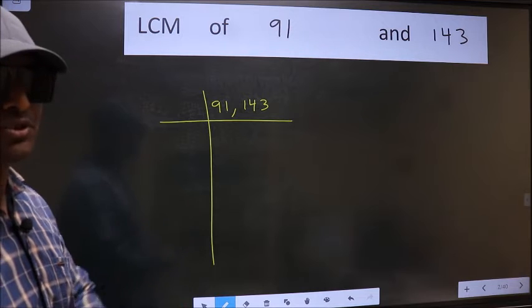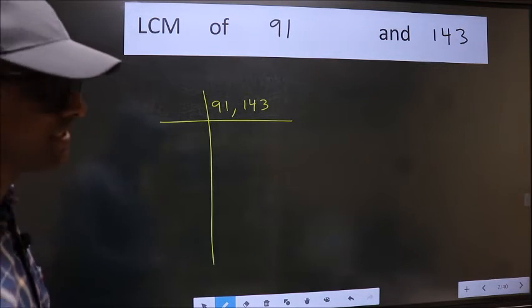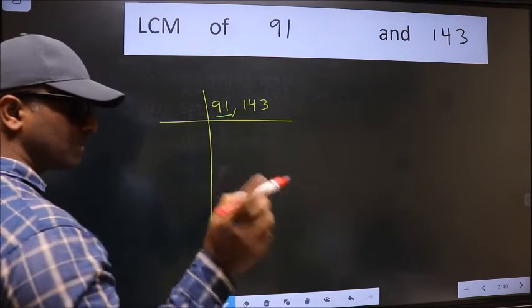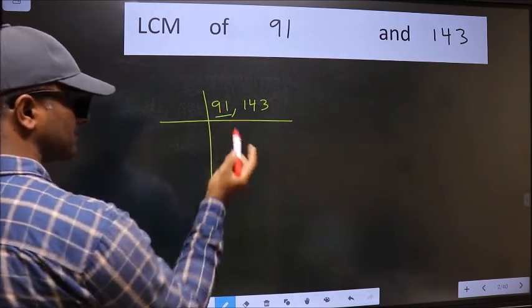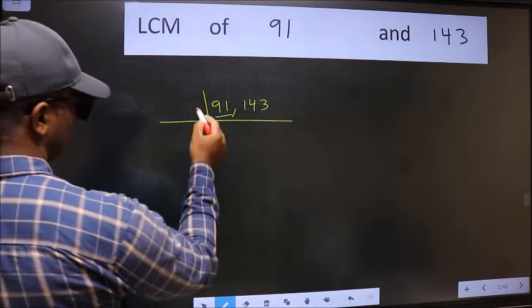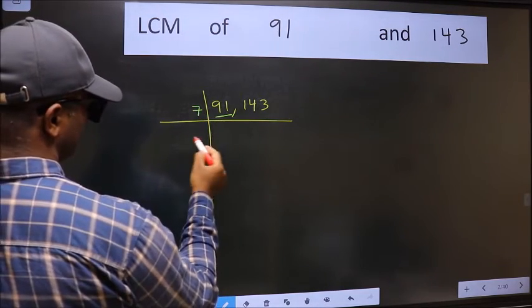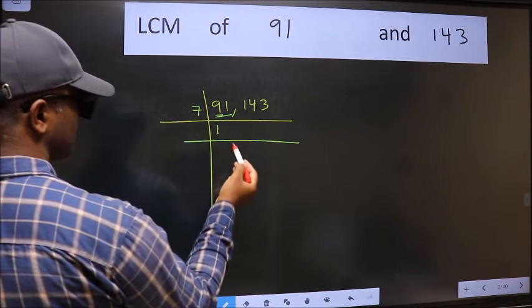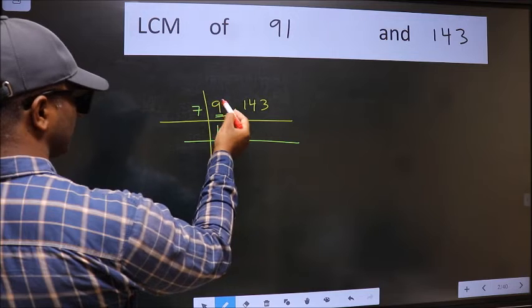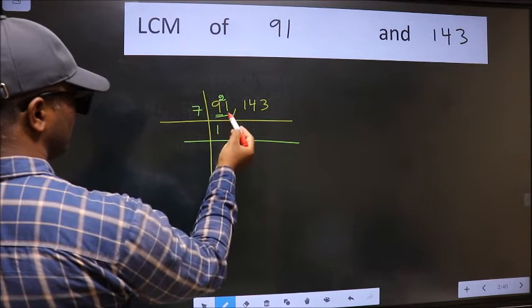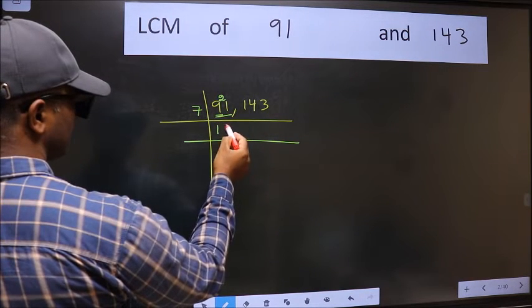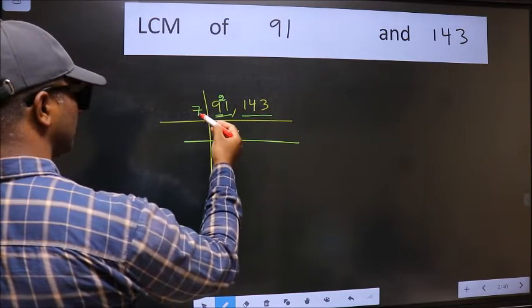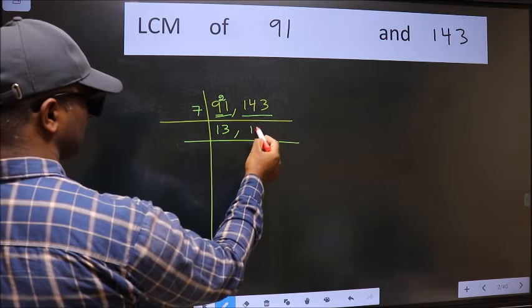Now focus on the first number, which is 91. Remember 91 is divisible by 7, so take 7 here. First digit is 9, the closest number in the 7 table is 7. 9 minus 7 is 2, 2 carried forward gives 21. When do we get 21 in the 7 table? 7 times 3 is 21. The other number 143 is not divisible by 7, so write it down as it is.